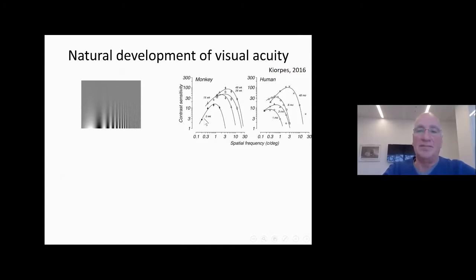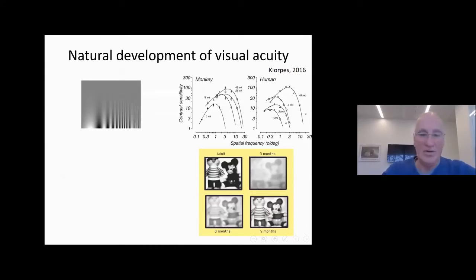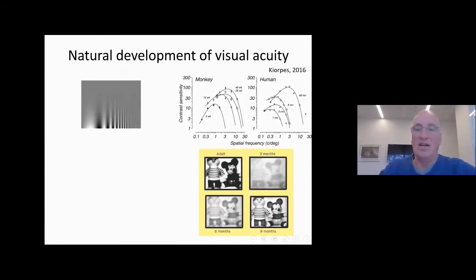You can see that within 49 weeks in monkeys and 48 months — about four years — in humans, one reaches the adult level of contrast sensitivity. These curves shift to the right so you're able to see higher and higher spatial frequencies, and contrast sensitivity grows, meaning you need lower contrast to detect a grating in the image. Initially you see the image at very low contrast and with time you get better and better appreciation of the image and the details it contains.